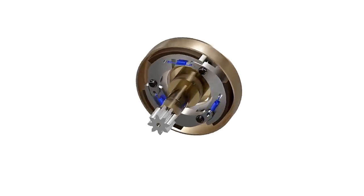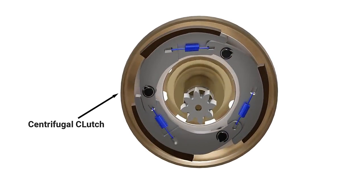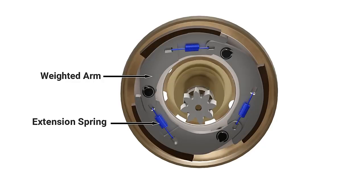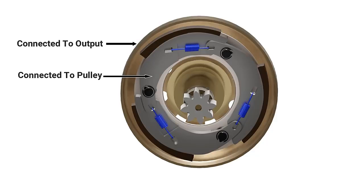This transmission system includes a centrifugal clutch assembly. The inner portion consists of weighted arms held in place by extension springs. These arms are connected to the pulley. The clutch housing is connected to the output gear.